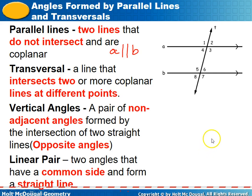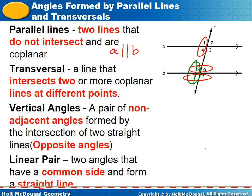Linear pairs are two angles that have a common side and form a straight line. Angles one and two, two and three, three and four, and one and four all form straight lines. Down here, five and six, five and eight, eight and seven, and six and seven are also linear pairs. Any pair of angles that form a straight line and share a side are linear pairs. Linear pairs are supplementary — the sum of their angles is 180 degrees.